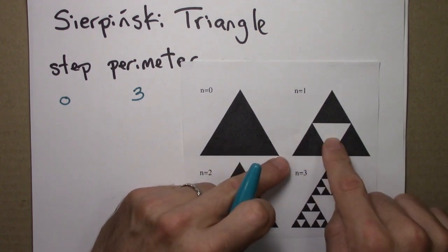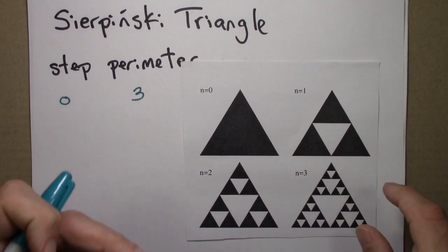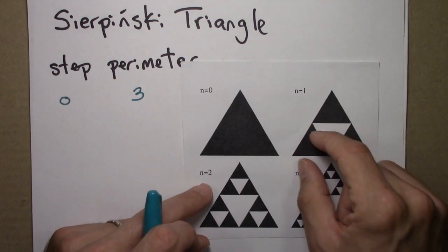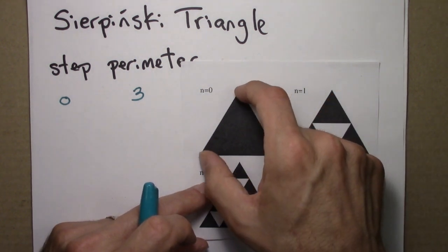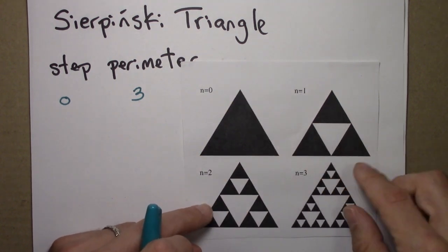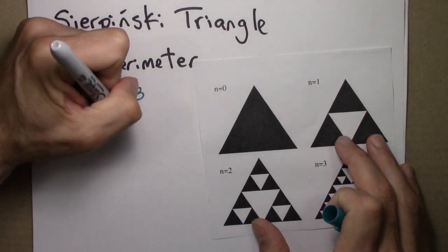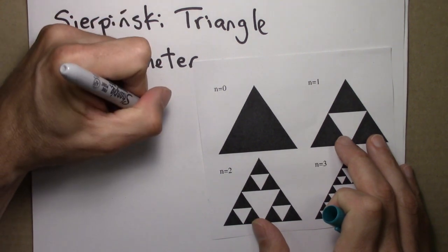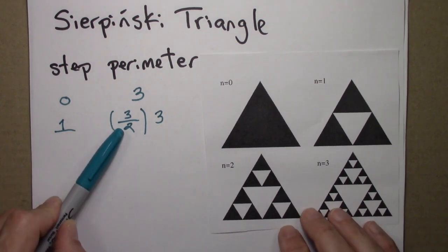At step 1, we now have 9 sides. The number of sides goes up by a factor of 3, but each side itself is half as long — because the original side is 1, each of these new sides is just 1/2. So there are 3 times as many things that are half as large. The perimeter at step 1 starts at 3 and gets multiplied by 3/2.